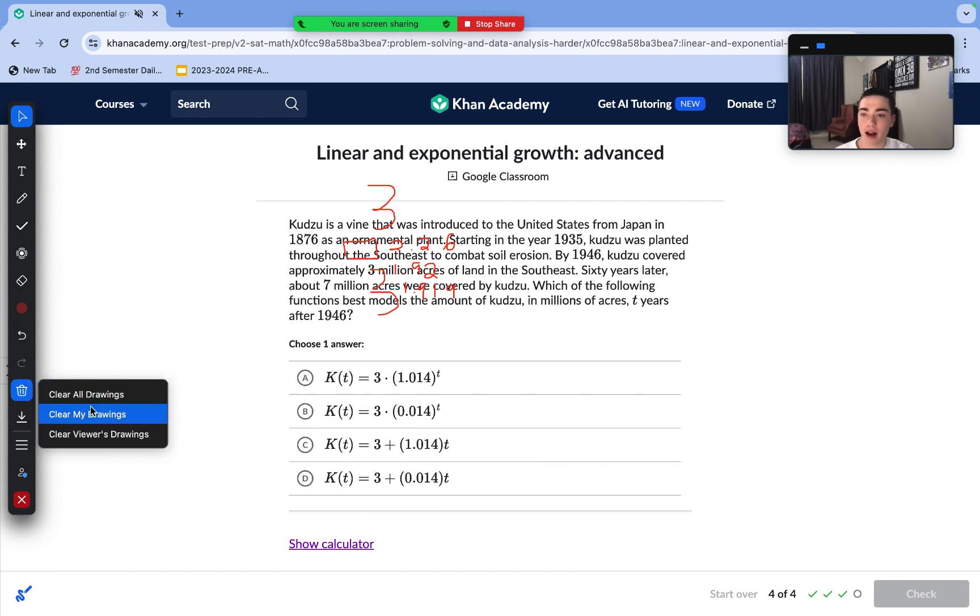Let's move on to our last question for this skill. So this is a vine that was introduced as an ornamental plant. It was planted throughout the southeast. It covered approximately 3 million acres of land. 60 years later, about 7 million acres of land were covered. Which of the following functions best models the amount of this plant in millions of acres, T years after 1946?